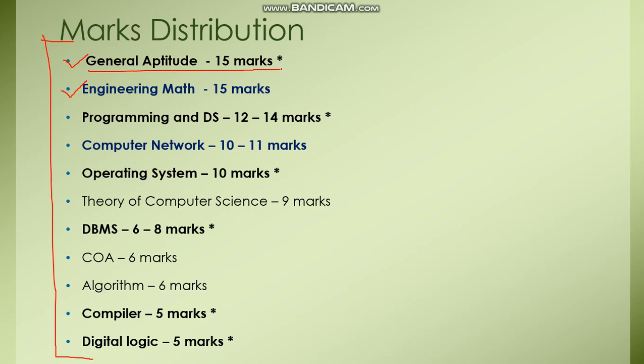In General Aptitude, 15 marks are coming. If you are focusing on General Aptitude and if you can solve all the previous year questions from 2019 to 2010, go backtracking, then you can score easily 10 marks. I am definitely telling you, because you all are from science background and General Aptitude is not so much difficult. If you can do it, then you can do it.